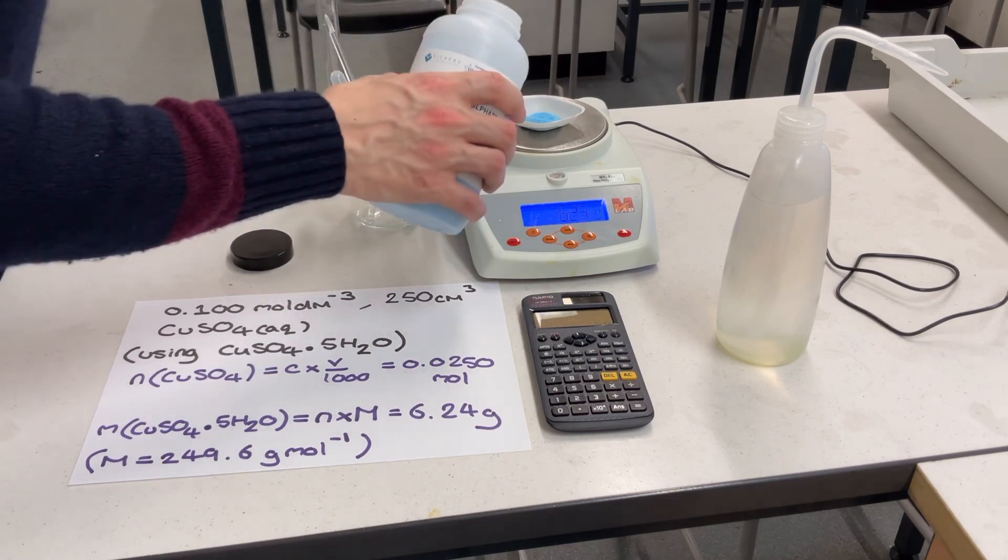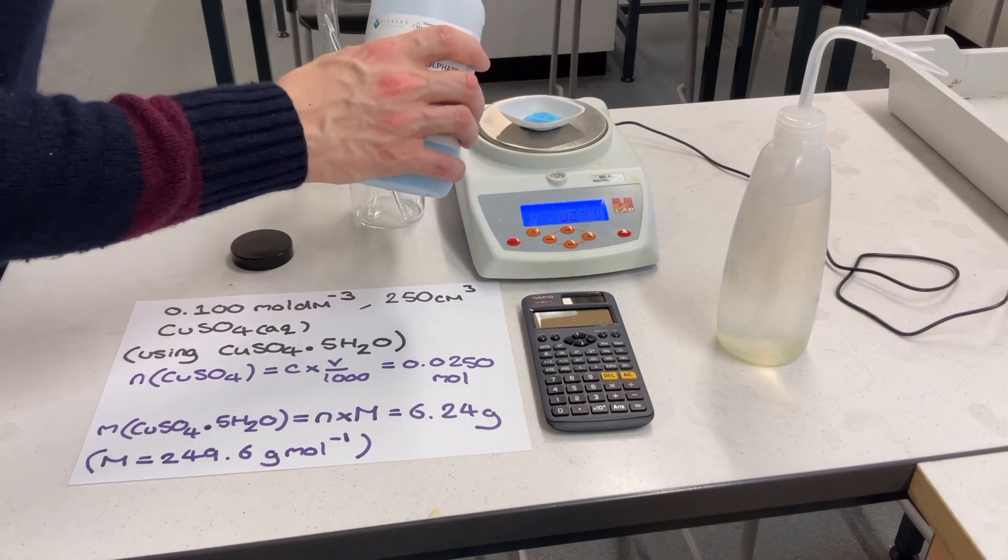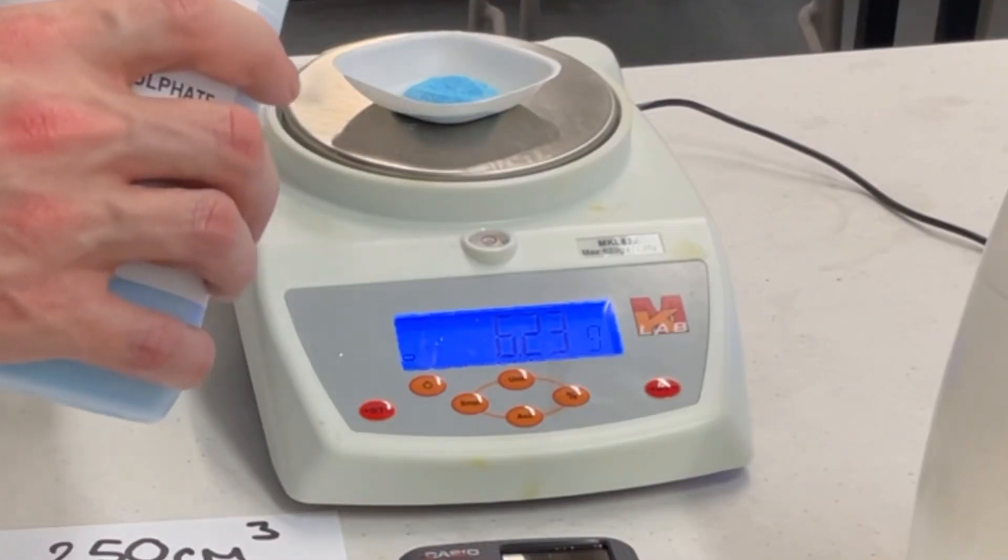Now on to the full procedure. Step 1: Record the mass of the solid to two decimal places using a balance.